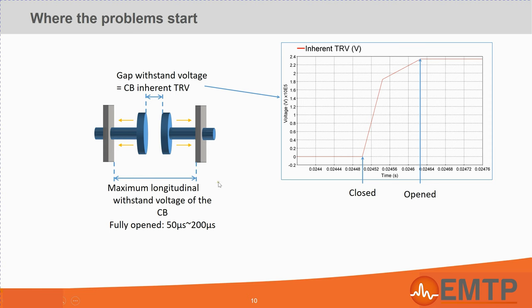The longitudinal voltage withstand of the circuit breaker is called the inherent TRV. Although it is very hard to know precisely the withstand voltage of a circuit breaker gap, standards exist to classify circuit breakers. For a given voltage rating and current interruption capability, a voltage withstand envelope is provided. Circuit breaker manufacturers must ensure that their circuit breakers have a withstand capability equal or superior to the one provided by standards. This is why, for TRV analysis, we usually use standard inherent TRVs.